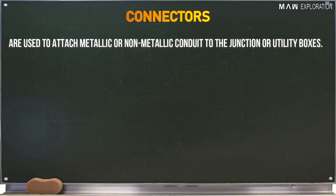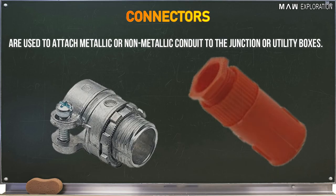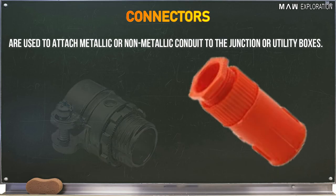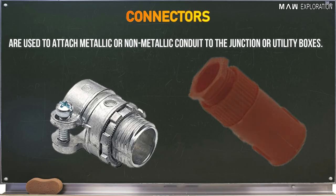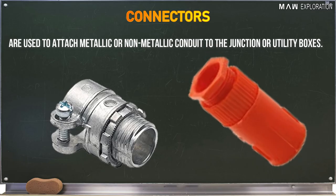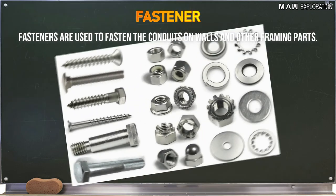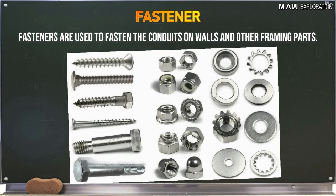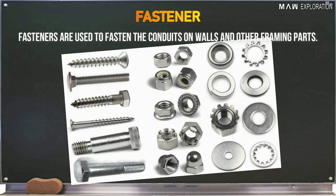Connectors are used to attach metallic or non-metallic conduit to junction or utility boxes. Types include metal connector and flexible non-metallic connector. Fasteners are used to fasten the conduits on walls and other framing parts.